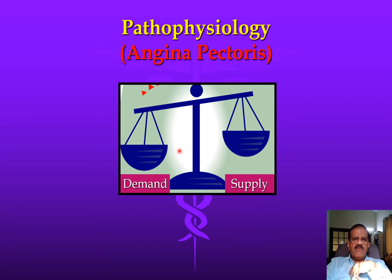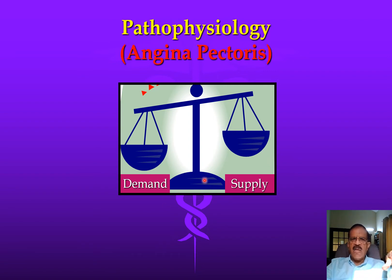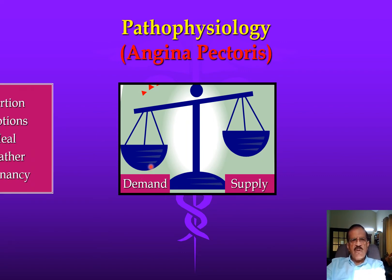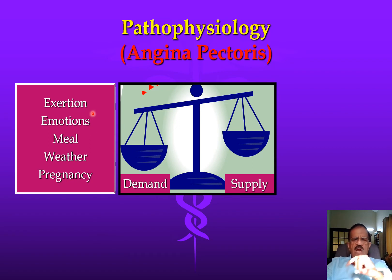Angina pectoris is actually a mismatch between demand and supply. In a normal person, no matter how high the demand, supply is also matched — so there is no mismatch. But in ischemic heart disease, where there is atherosclerosis, if demand increases but supply cannot because of the fixed narrowing of the vessel, that is when angina is likely to occur. Certain conditions can increase demand — for example, high-intensity exertion.